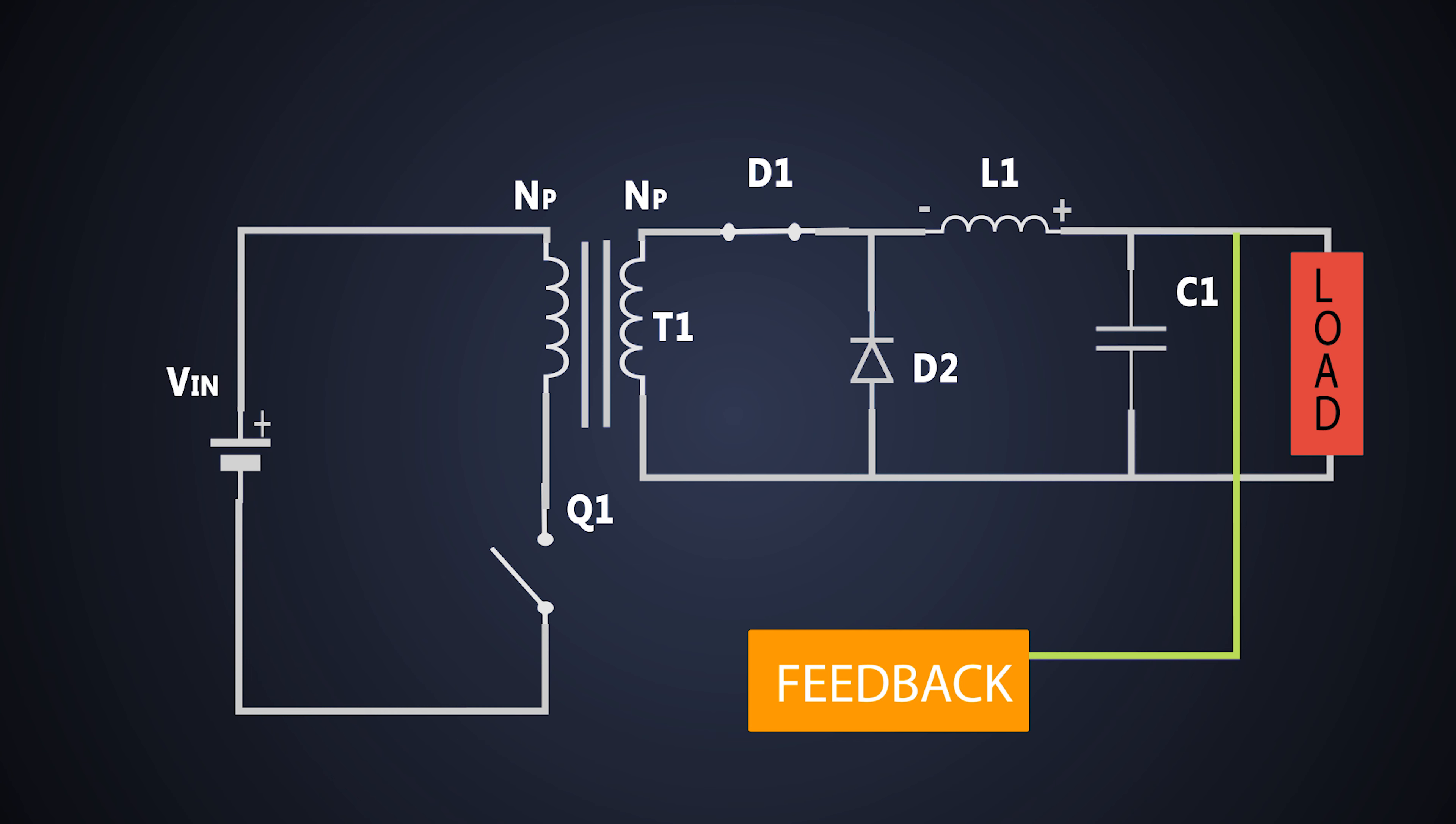But due to sudden change in current and stored energy in the L1, its polarity changes so the diode D2 gets forward biased, providing power to the output. So this is how an ideal forward converter works.